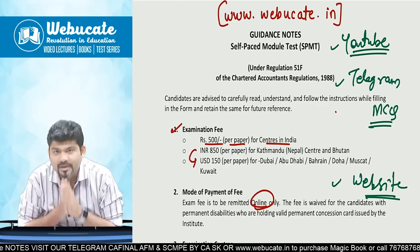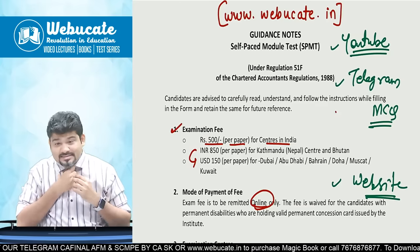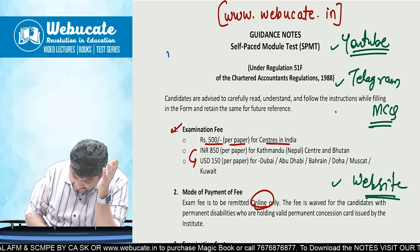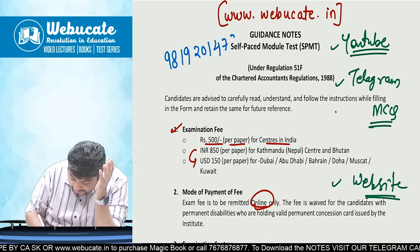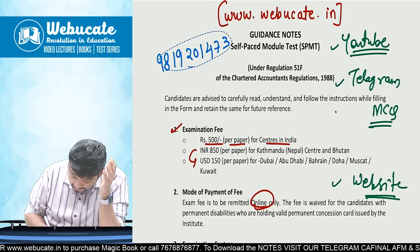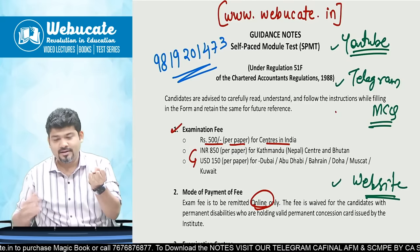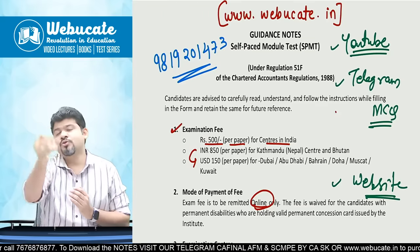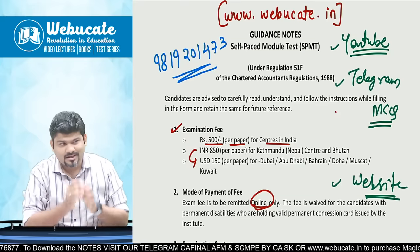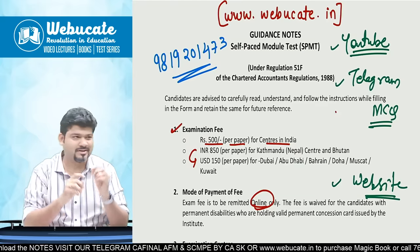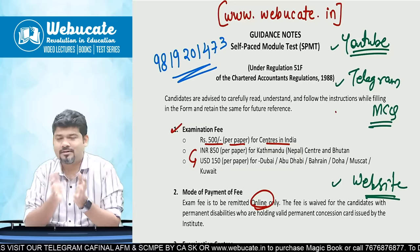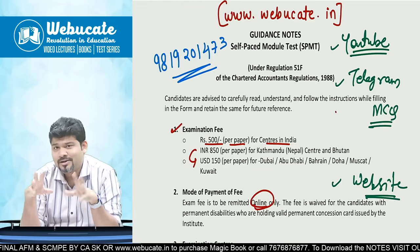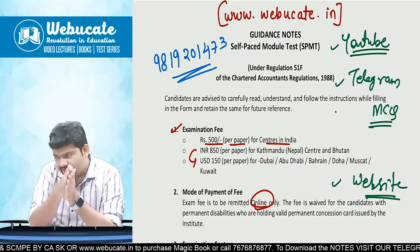For any further queries, students can WhatsApp the instructor whose details are shared in the description. Tentatively, students can expect to start giving exams from the first week of June — the institute opened registration from around 25th–26th May, but factor in a 4–5 day buffer as the institute and technical systems get used to the new process.